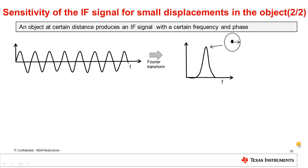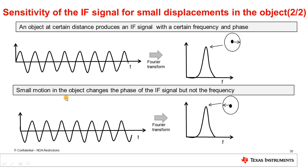To reinforce this: an object at a certain distance produces an IF signal with a certain frequency and phase. Here the IF signal is a sine wave with a certain frequency and starting phase of zero, and the Fourier transform produces a single peak whose phase corresponds to the starting phase of the sine wave. If we move the object by a small amount — one millimeter in this example — the starting phase changes by 180 degrees, and correspondingly the location of the FFT peak remains the same, but the phase of the peak changes by 180 degrees.